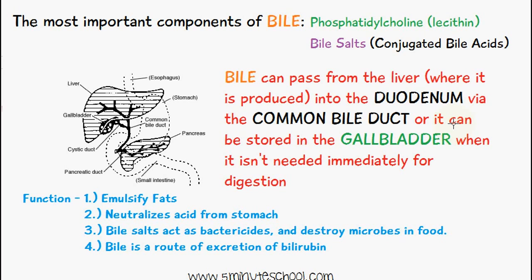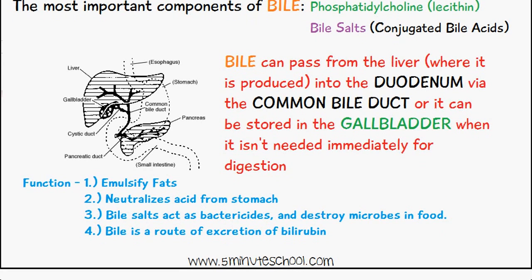Bile also neutralizes the acid from the stomach. Bile is an alkaline solution, so it neutralizes the acidic stomach contents. Bile salts also act as bactericides, destroying microbes in food. Finally, bile is a route for the excretion of bilirubin, which is an important component of hemoglobin — we'll cover that in a separate video.